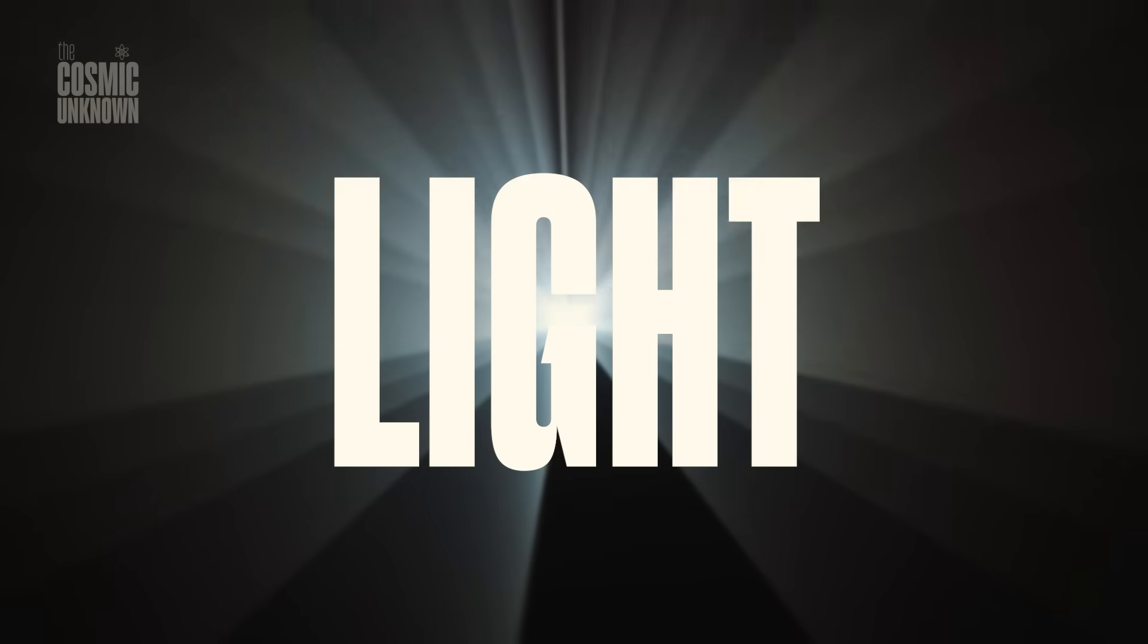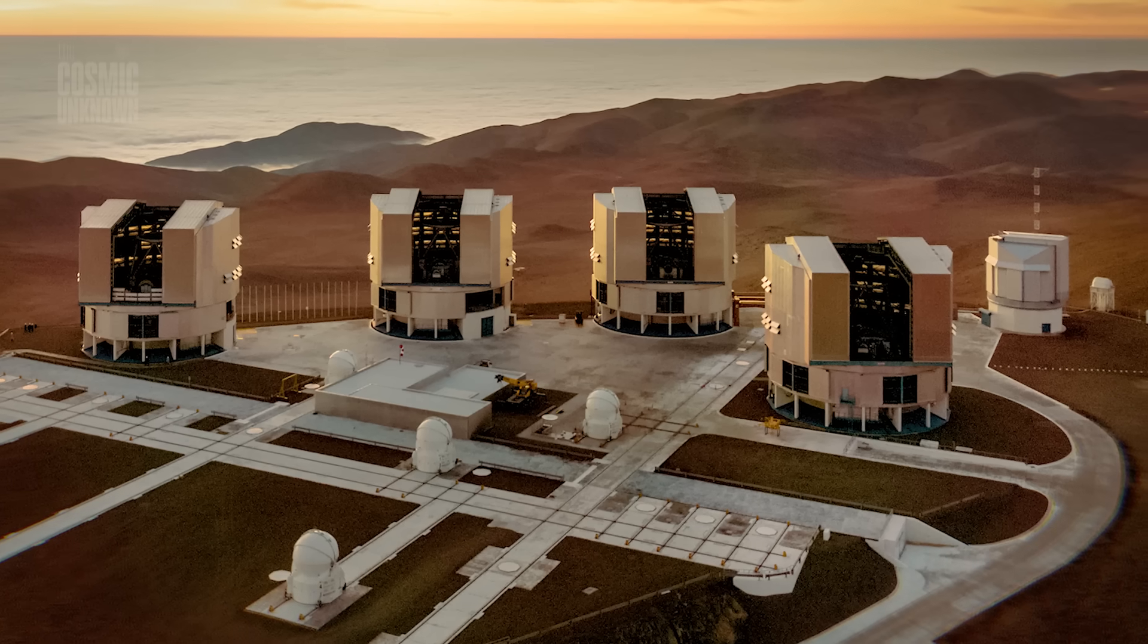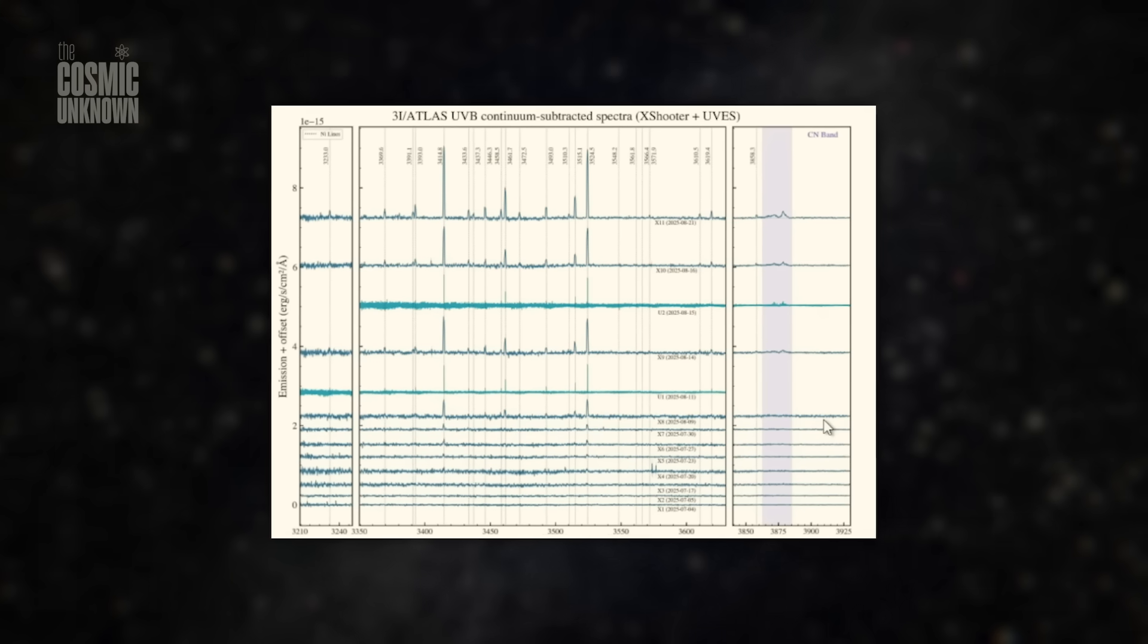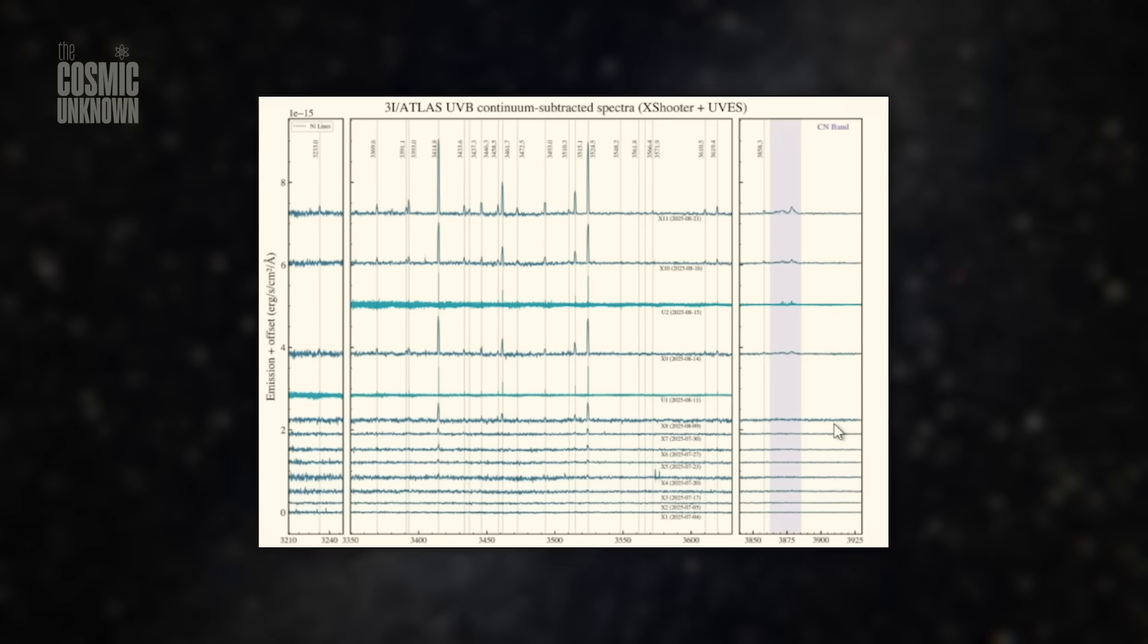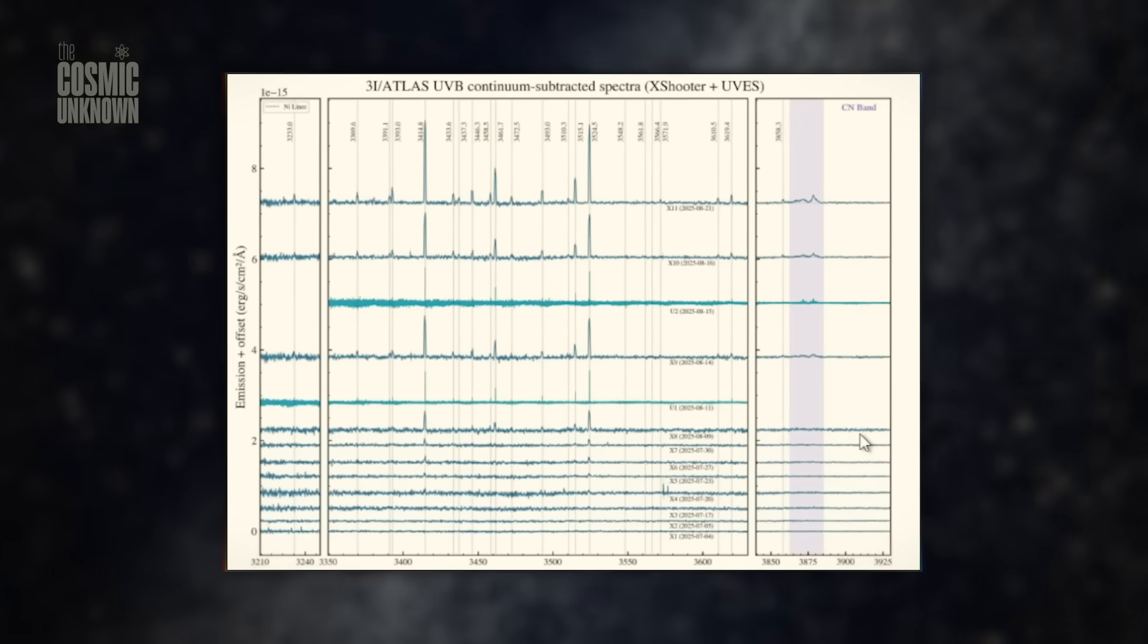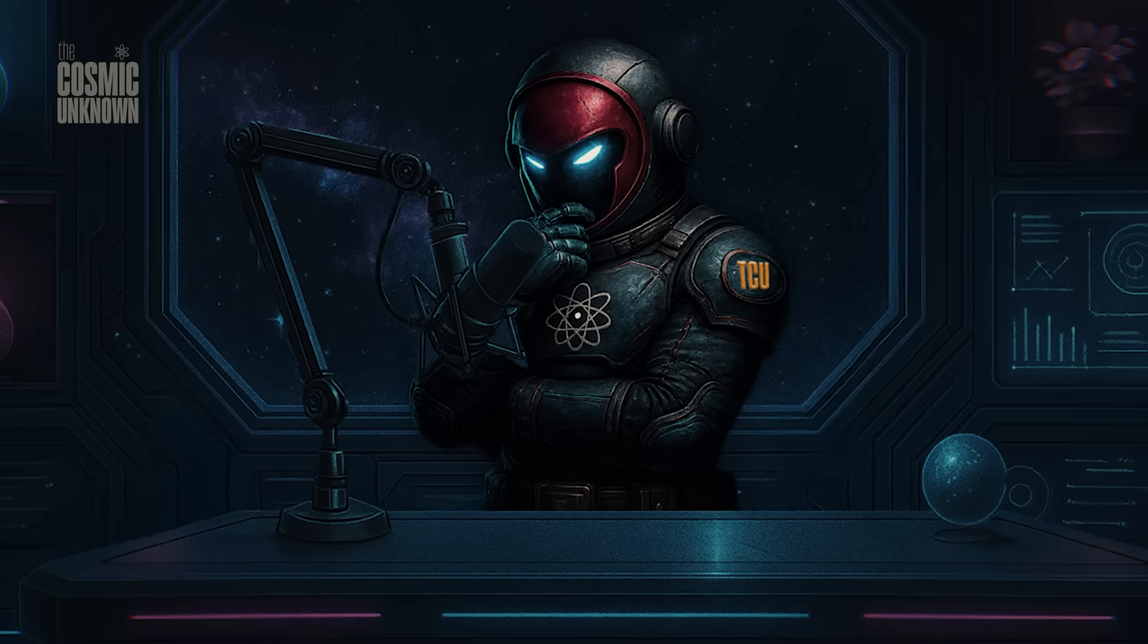It started with light, broken into wavelengths, analyzed by one of the most powerful instruments on Earth, the Very Large Telescope. Using high-resolution spectroscopy, scientists watched 3I Atlas closely from early July through late August. Not just a snapshot, but a cinematic sequence of its chemical evolution.